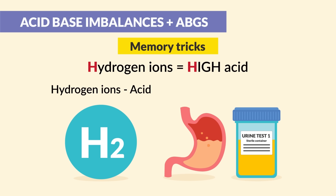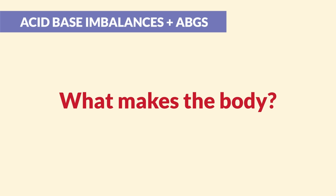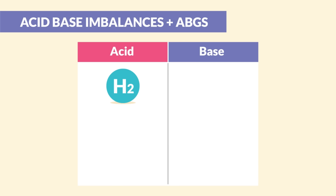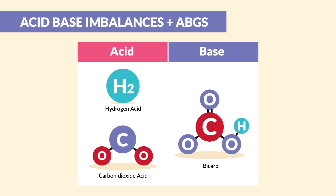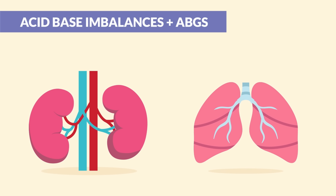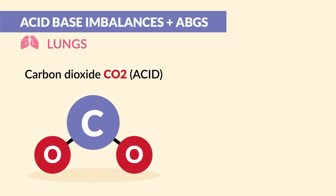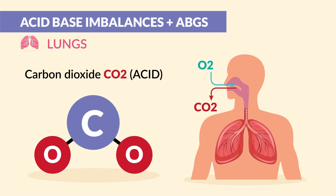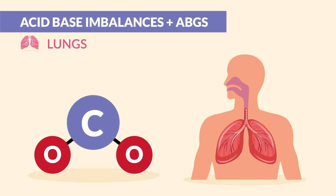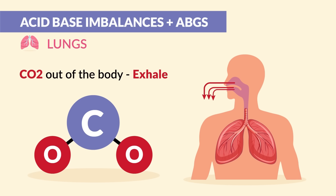Simply organize this in your mind: what makes the body acidotic? Hydrogen ions — high acid — and carbon dioxide, carbon diacid. For base, which makes us alkalotic, just think bicarb equals base. The main organs that control these are the lungs and the kidneys. The lungs control CO2 — we breathe in oxygen and breathe out that CO2. The main way to get CO2 out of the body is by exhaling.